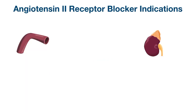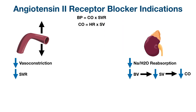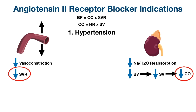Now that we know the mechanism of action, let's look at some indications. The indications for ARBs are fairly similar to ACE inhibitors because their mechanisms are similar. ARBs decrease vasoconstriction — which decreases systemic vascular resistance — and decrease sodium and water reabsorption — which decreases blood volume, stroke volume, and cardiac output. Decreasing both systemic vascular resistance and cardiac output decreases blood pressure, which is why ARBs are used to treat hypertension.